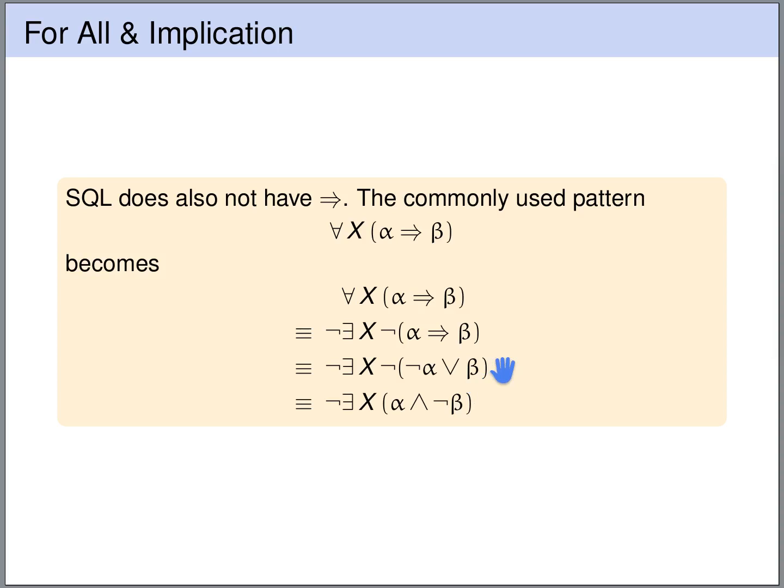And at this point we could stop, or we could use De Morgan's law to further simplify this. If we use De Morgan's law then we can move this negation sign, we can distribute it over the or, but then the or turns into an and. So the or becomes an and by De Morgan's law, not not alpha is just the same as alpha, and beta becomes not beta. So this pattern that we want to express, we can do so by the equivalent statement not exists an x alpha and not beta.